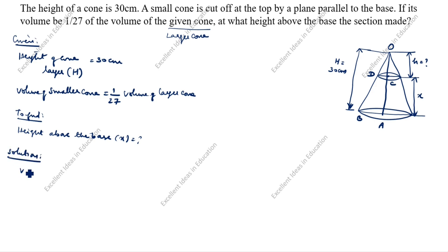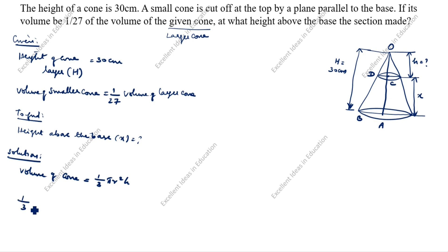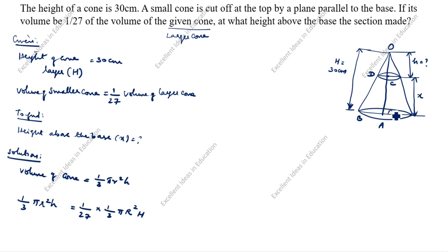Solution: The volume of a cone formula is Volume = 1/3 × π × r² × h. Given that volume of smaller cone equals 1/27 times volume of larger cone, we write: 1/3 × π × r² × small h = 1/27 × 1/3 × π × R² × big H. Here big R is the radius of the larger cone and small r is the radius of the smaller cone.